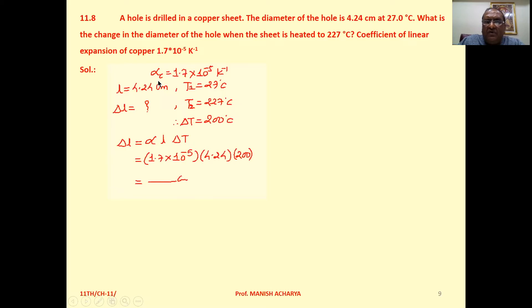Alpha for copper is 1.7 into 10 raised to minus 5 Kelvin inverse. At temperature T1, 27 degrees Celsius, L is 4.24 cm. At temperature T2, 227 degrees Celsius.